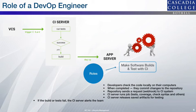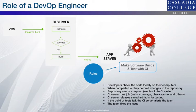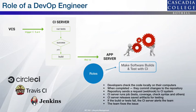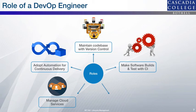If the build or test fails, the CI server alerts the team and the team fixes the issue. You can choose either CircleCI, Travis, or Jenkins. These are tools that allow continuous integration, letting you define continuous integration, continuous tests, and a continuous delivery pipeline for your projects. Expert knowledge about using these tools is required, so a DevOps engineer must have the skills to configure CircleCI, Jenkins, and other CI tools, and understand how they interact with source code repositories.